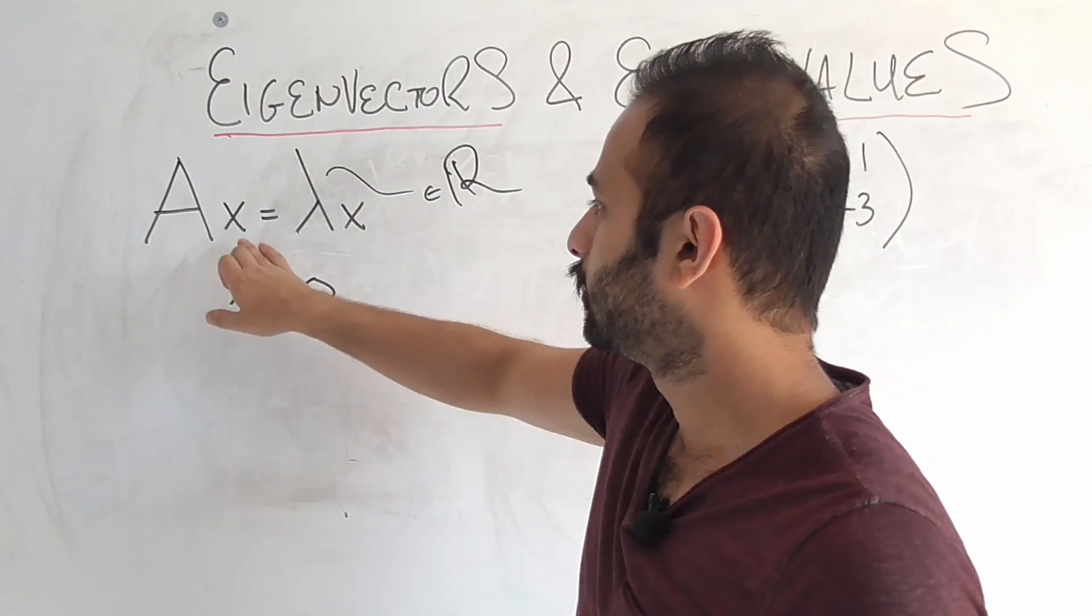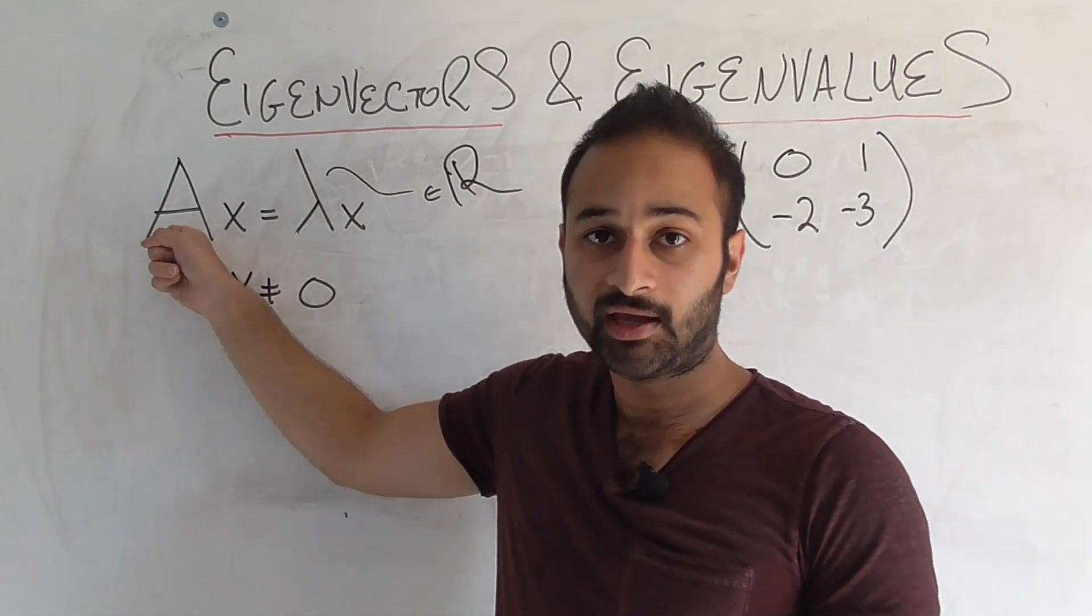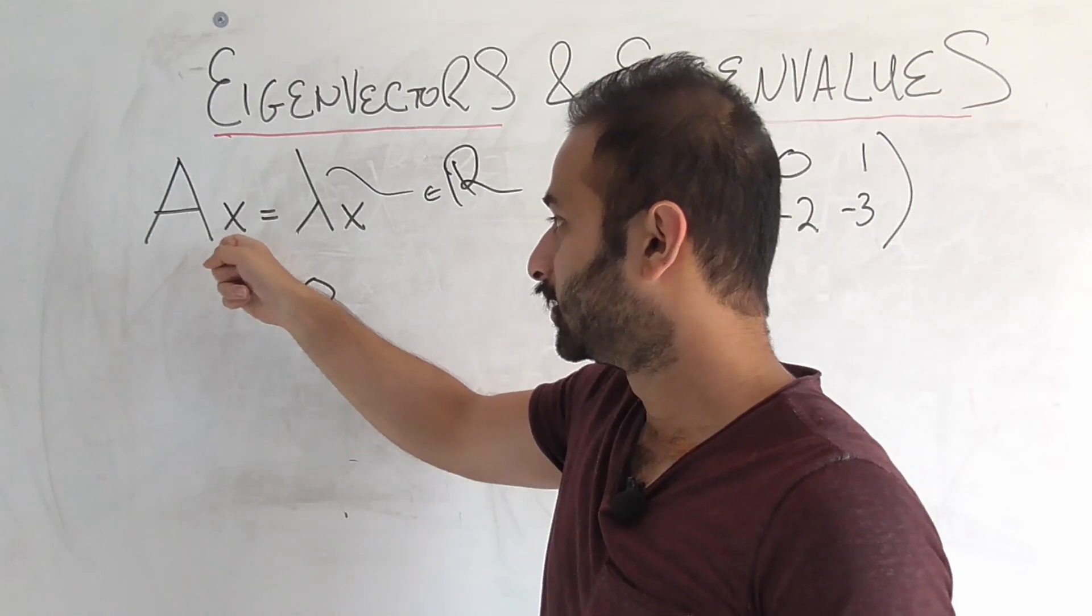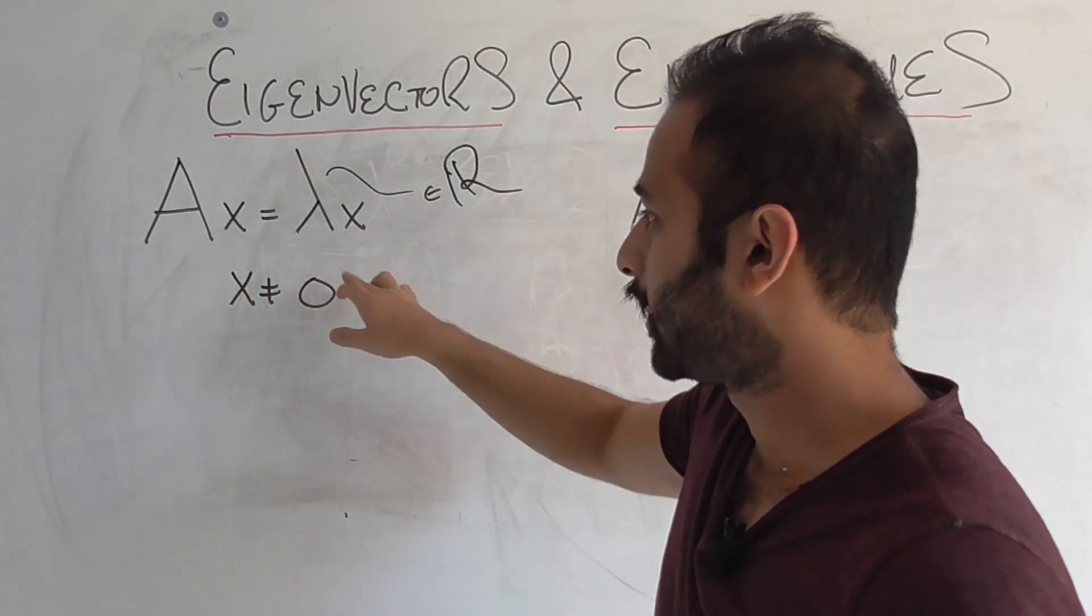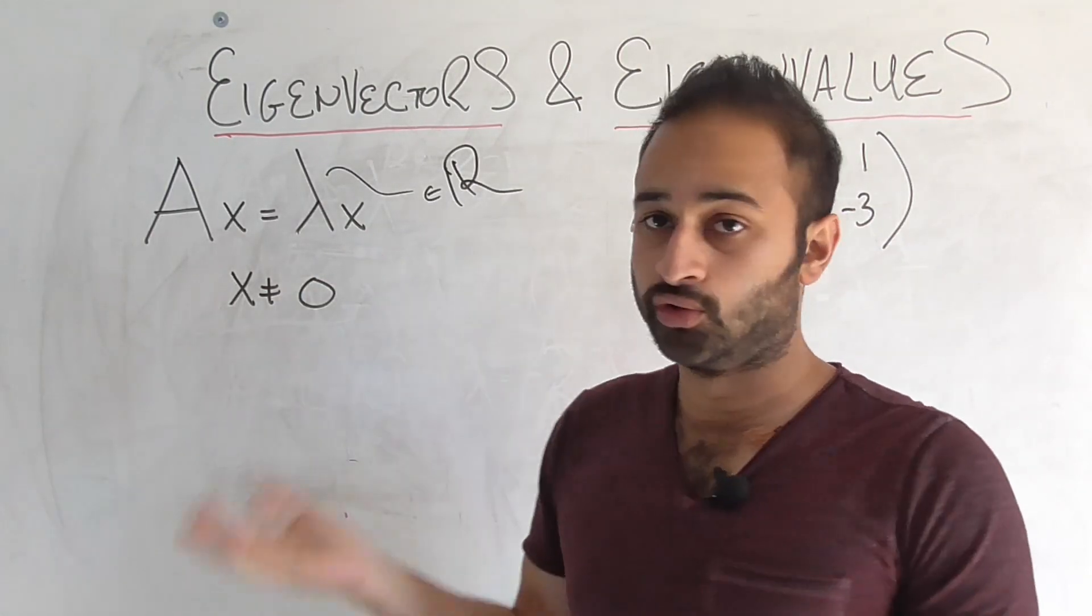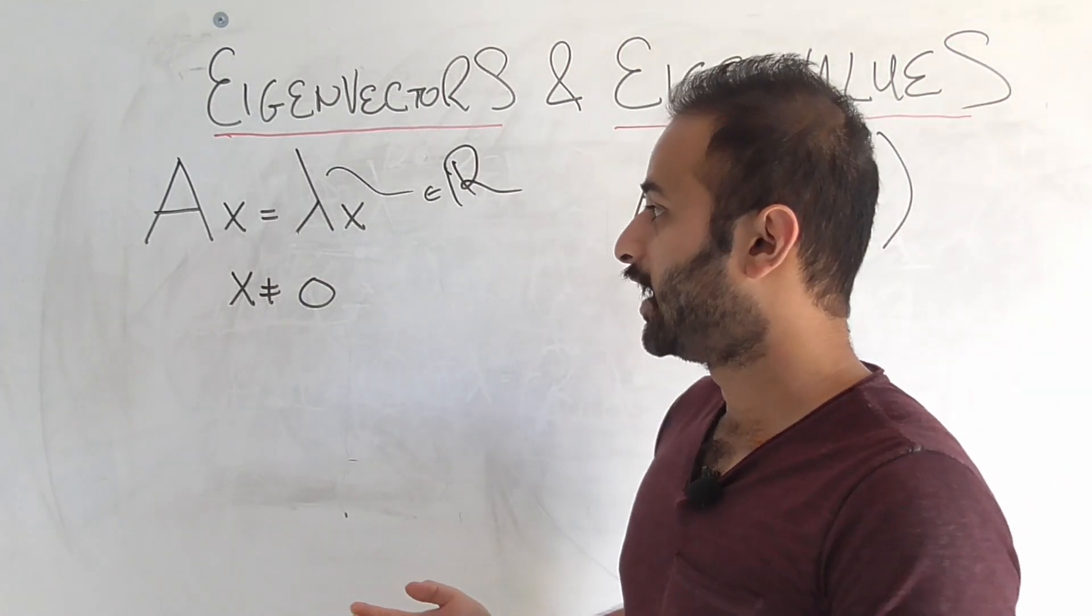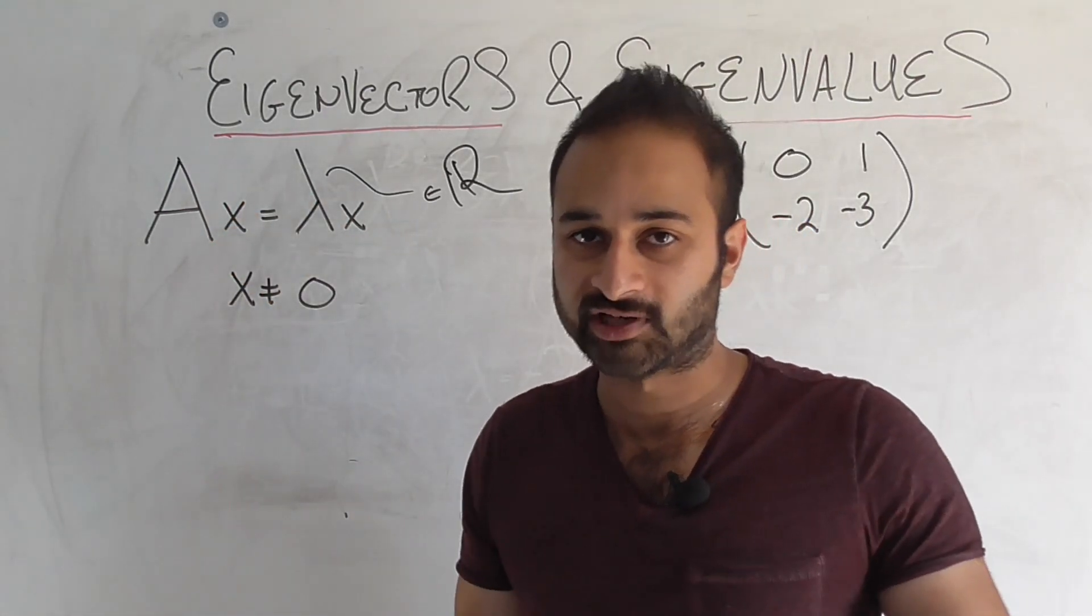an eigenvector is any vector x which is not equal to zero, such that multiplying matrix A by vector x gives back some multiple of vector x, where that multiplier is lambda, which can be any real number. So for example, lambda could be 2 or negative 1, in which case you would have Ax gives back negative 1 times x, or 2 times x.